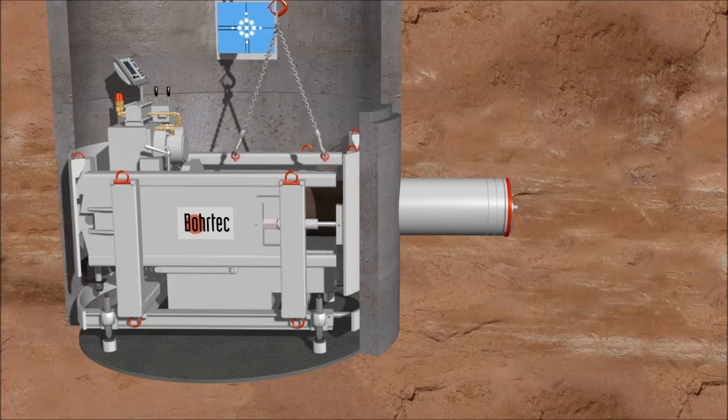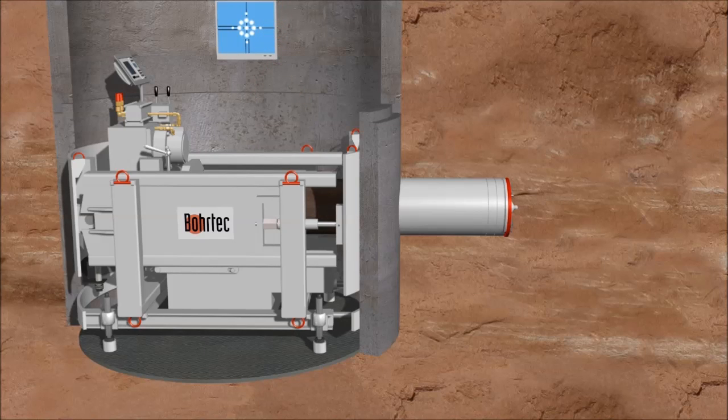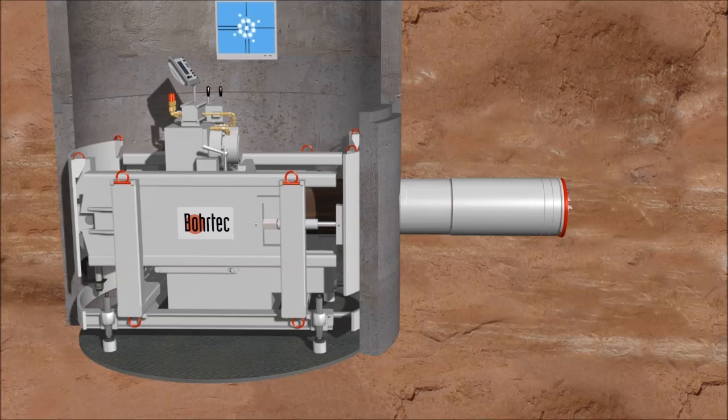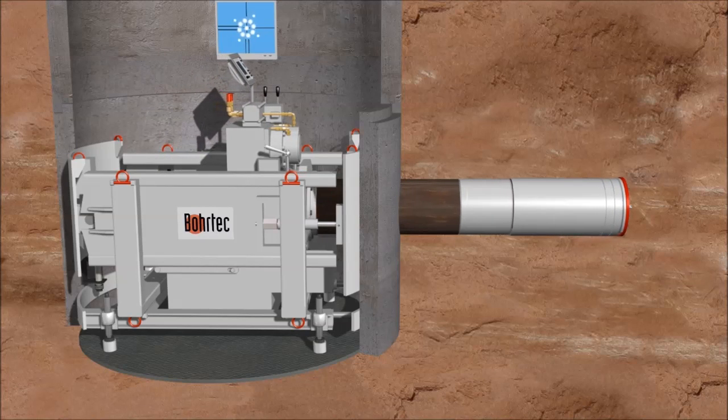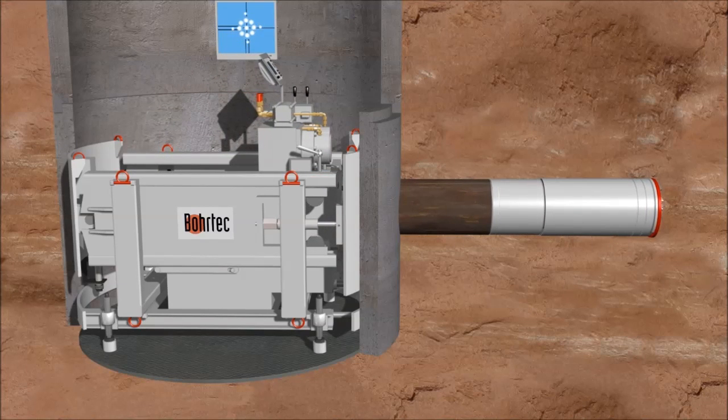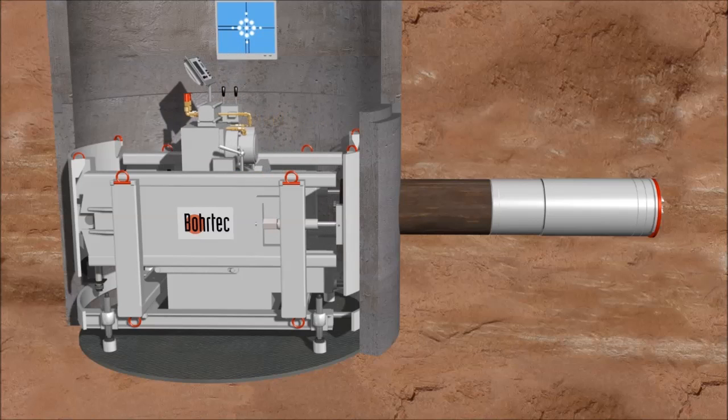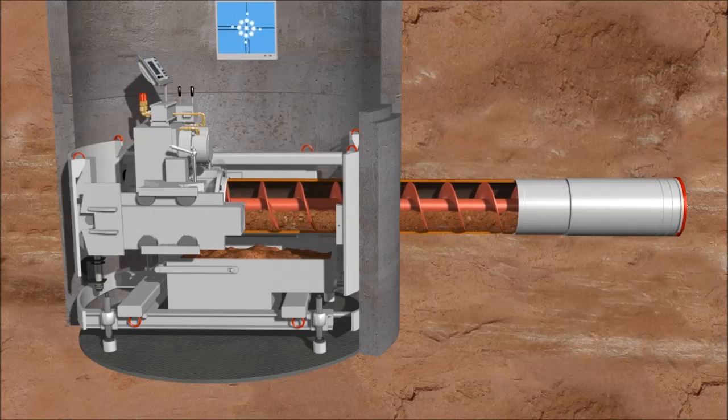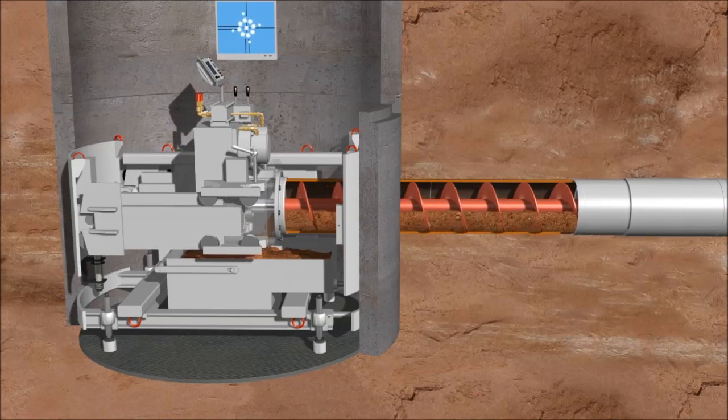The excavated soil is transported by hollow augers to the working shaft. The excavated material that is conveyed out by the hollow augers falls into the muck skip in the working shaft.